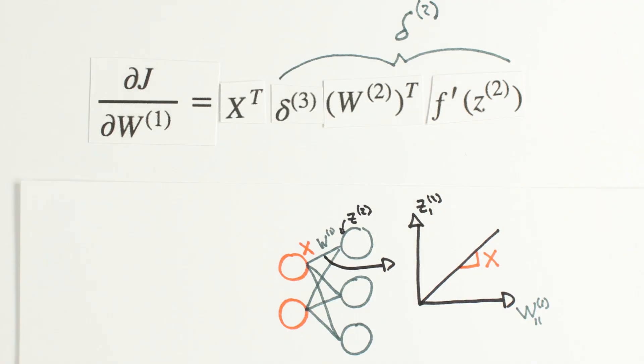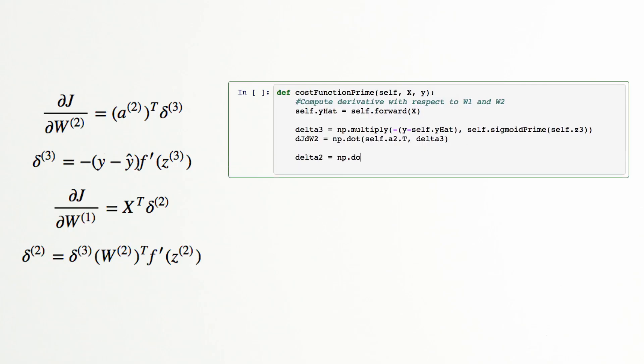All that's left is to code this equation in Python. What's cool here is that if we want to make a deeper neural network, we could just stack a bunch of these operations together.